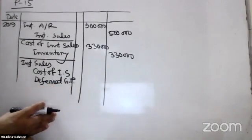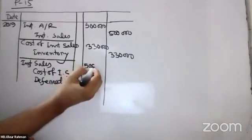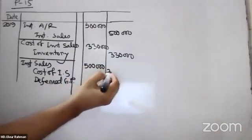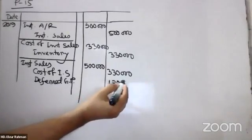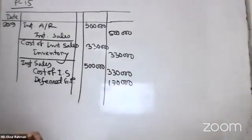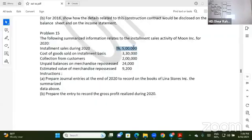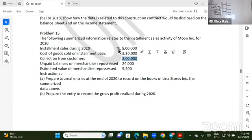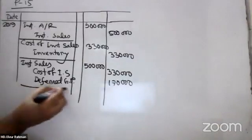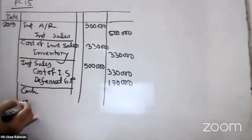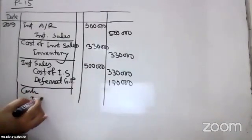Deferred gross profit credit — past the entry because after something. Yes.